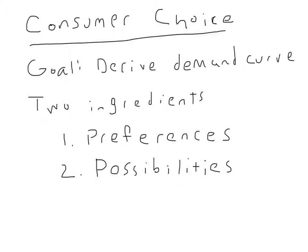There's going to be two ingredients in our theory of consumer choice. First, we're going to talk about preferences. The consumer has to have preferences between the different goods he can buy. In this unit, we're working on soda and pizza. He's going to have to have preferences about how much soda he wants to drink and how much pizza he wants to eat, and the trade-off between the two.